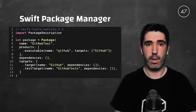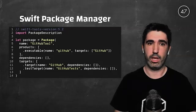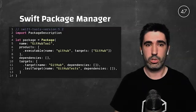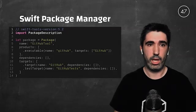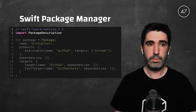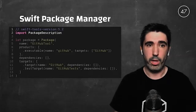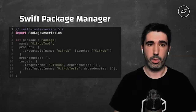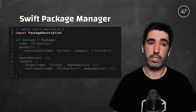Among the generated files, we can find the Package.swift file, which is a manifest that describes the structure of the project we are building. This file is written in Swift. First, we have a line describing the version of the Swift tools we are going to use — in this case 5.2. Then we import the PackageDescription module that contains all the data types we need to describe our package.